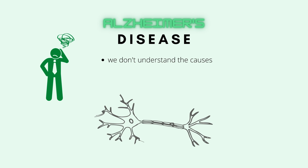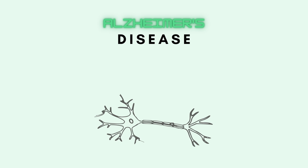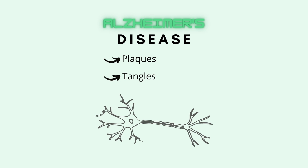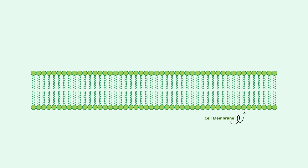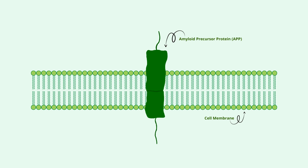Although the causes of Alzheimer's disease are not completely understood, two major players that are often cited in its progression are plaques and tangles. To understand the pathophysiology, here we have the cell membrane of a neuron in the brain. In the membrane, we have a molecule called amyloid precursor protein, or APP. One end of the protein is inside the cell, and the other end is outside the cell.